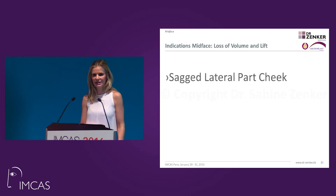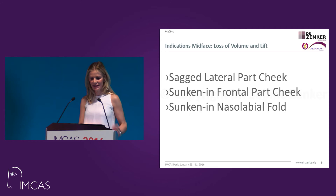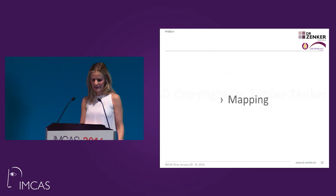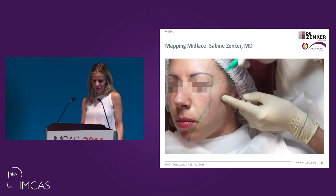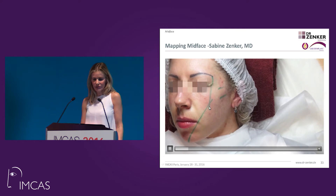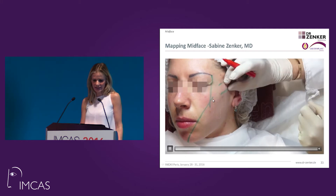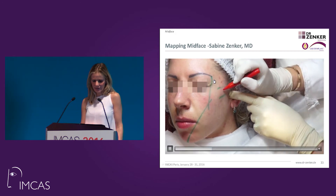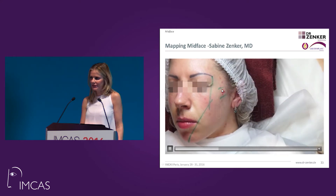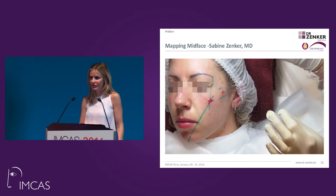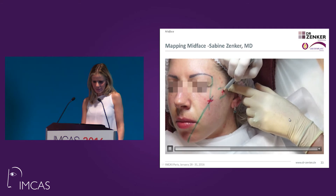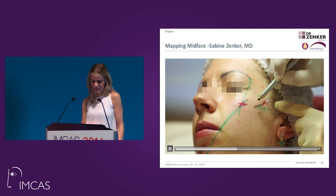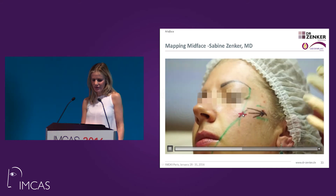The typical indications for the mid-face for me are the sagging lateral part, the sunken frontal part, as well as the nasal labial fold. A mapping might help to find the right entry points. The two basic lines I draw are: the line perpendicular from the lateral orbit, and the other line coming from the mid-mentum crossing this line — that is the cheek apex point entry. I also mark the zygomatic arch entry point, the lateral approach for the lateral lifting. We will basically fan from this lateral point and bolus from the cheek apex point.